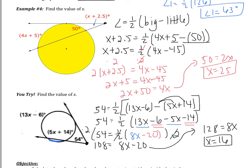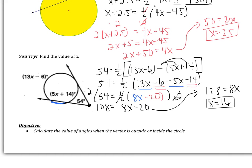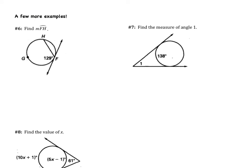If you got that right, great job. If you made a mistake, that's okay — I fully expected it. Please remember you have to distribute that negative, because you will see this again in classwork, on a quiz, and on the test. So that was our last example. The objective was to calculate the value of angles when the vertex is outside or inside the circle. Please flip the page — you have examples 6 and 7 to complete. I will tell you the answer to number 7: angle 1 equals 41 degrees. You must show work for both; if you come with answers but no work, you will not get full credit.